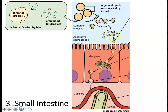As fat enters the small intestine, it's clustered in large fat droplets or globules. Remember that fat is hydrophobic — it doesn't want to interact with the surrounding water, so it clusters together in these big globules. Emulsification is the process that breaks those large fat droplets into smaller droplets, and bile is instrumental in this. Bile is made in the liver and stored and secreted by the gallbladder. Bile salts can interact with both water and fat, allowing them to cluster around smaller droplets, break apart the large fat globules, and disperse them into the watery environment of the small intestine, increasing surface area for enzymes to attach and break down the triglycerides.